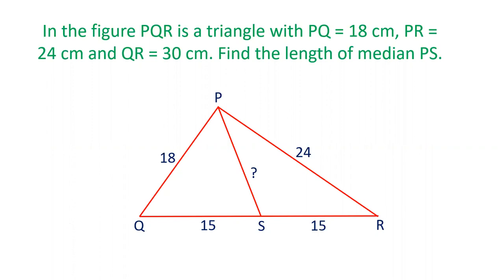Friends, in today's question, there is a triangle PQR with PQ 18 centimeters, PR 24 centimeters, QR is 30 centimeters, and there is a median given PS. We have to find out the value of the length of PS. So let's see how we can solve this question.